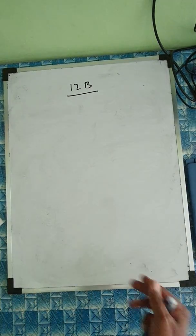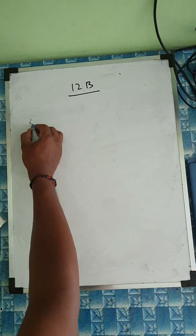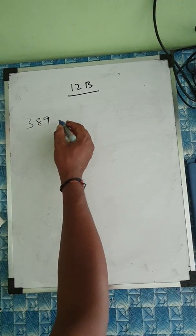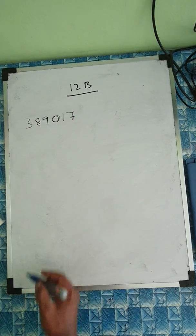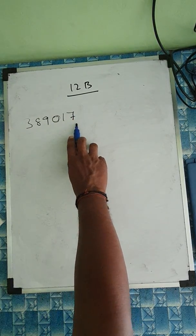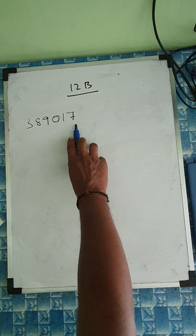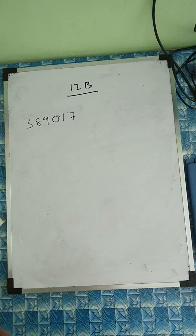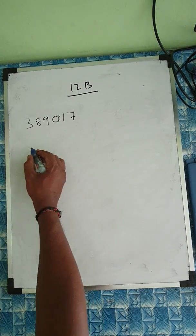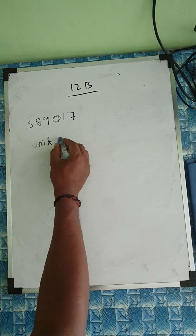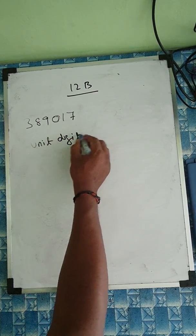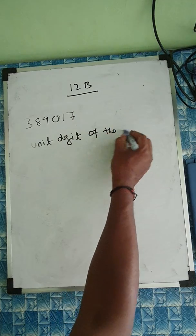For the estimation method, we have the number 389017. You need to do this carefully. First, look at the last digit — the last digit here is 7. So the unit digit of the given number is 7.